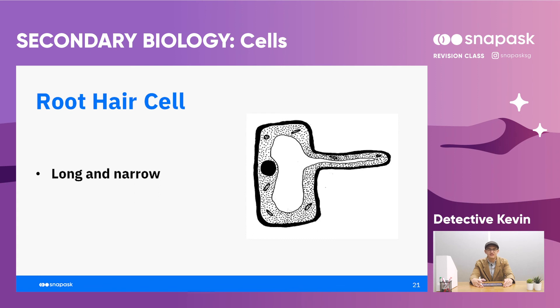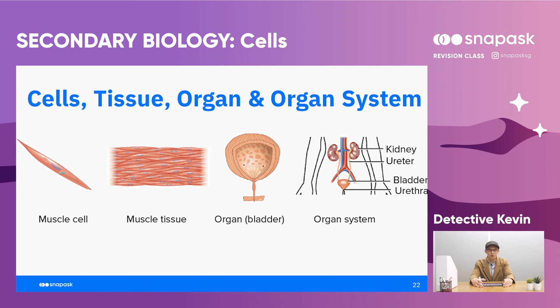Let's take a look at the division of labour. It starts off with a cell — in this example, we can see the muscle cell. When a lot of muscle cells associate together, they form muscle tissue. When all this muscle tissue associates together, it forms an organ — in this case, the bladder. Subsequently, the organ system is where you have a lot of organs coming together.